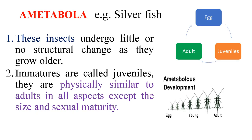The first one is ametabola. These insects don't undergo any structural changes. For example, silverfish. They have three life stages: egg, juveniles, and adults. The juveniles are physically similar to the adults in all aspects except size and sexual maturity. Here you can see that the juveniles are looking similar to the adults.